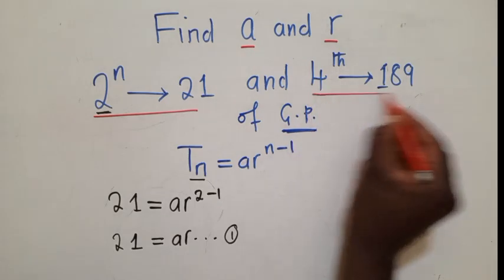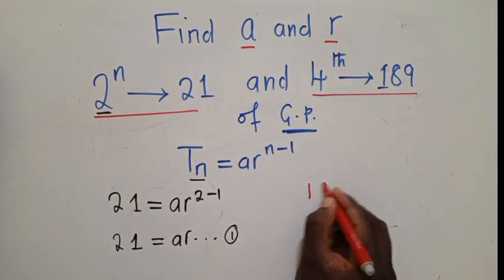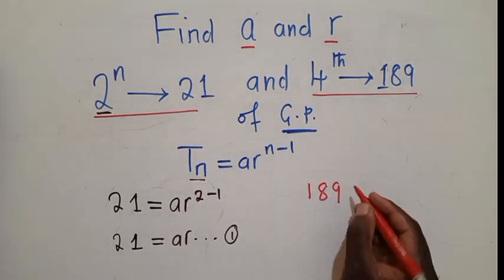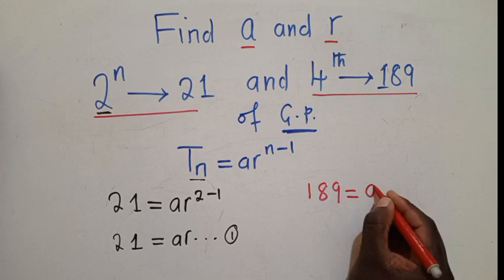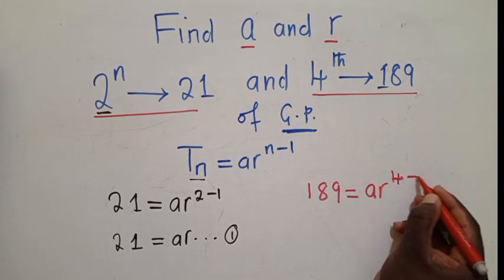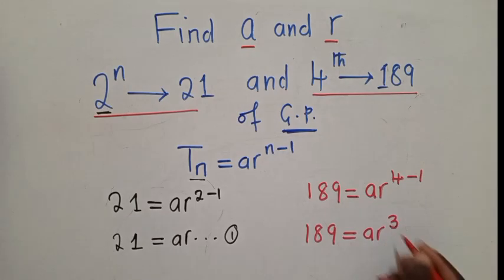We form another equation. Equation 2 will come from the fourth term. We shall say 189 is equal to ar to the power 4 minus 1. We also do the same. We simplify. And we shall call this as our equation 2.